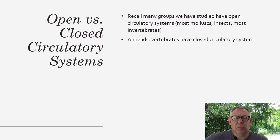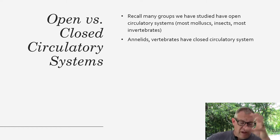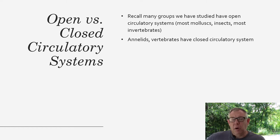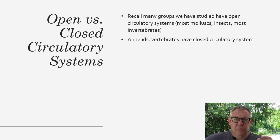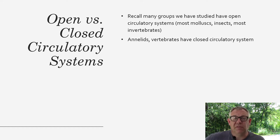We've studied some groups in lab that have had open circulatory systems, where you've got a heart that pumps blood but there aren't really a lot of blood vessels — the blood just kind of swishes around. Most mollusks do this, but some of the more active mollusks have a more closed system. Insects and most invertebrates also have open systems.